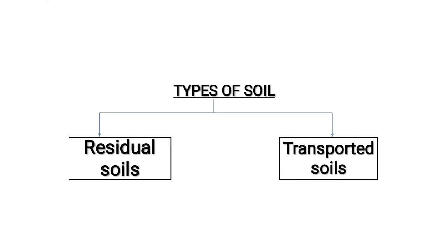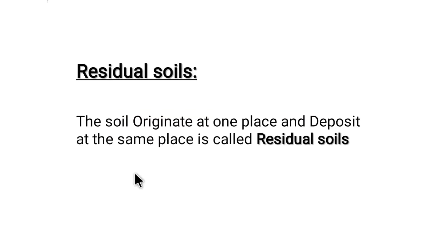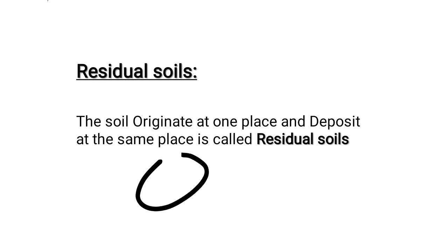First of all, there are two types of soils: residual soil and transported soil. Residual soil is the soil that originated at one place and is deposited at the same place where it originated. For example, a big rock, broken down by environmental conditions, collapses and stays at the same place — that is residual soil.